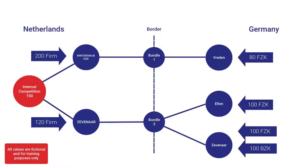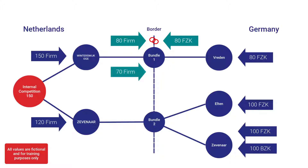The matching by the platform is done like this. At the Winterswijk-Vreden bundle, the uploaded 200 firm of GTS are reduced to 150, since this is the maximum capacity that can be provided on the internal side. Then AT firm and FZK are bundled, and the remaining 70 by GTS are offered as unbundled capacity.